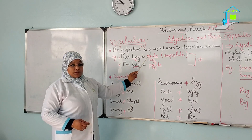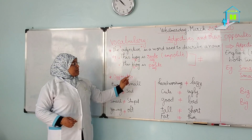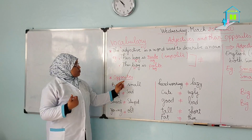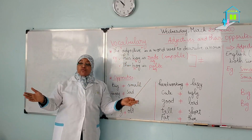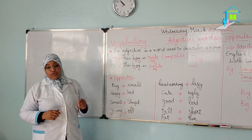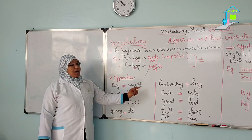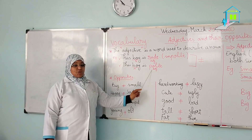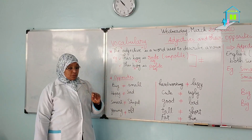An adjective is a word used to describe a noun. For example, 'this boy is rude' — rude is an adjective which is used to describe the noun 'boy.' For example, 'this classroom is large' — classroom is a noun, large is an adjective used to describe the classroom. Here we have 'this boy is polite' — boy is a noun, polite is an adjective used to describe the word boy.